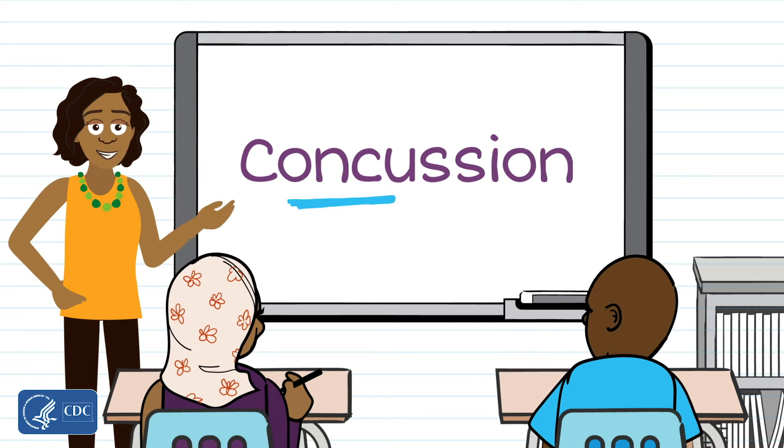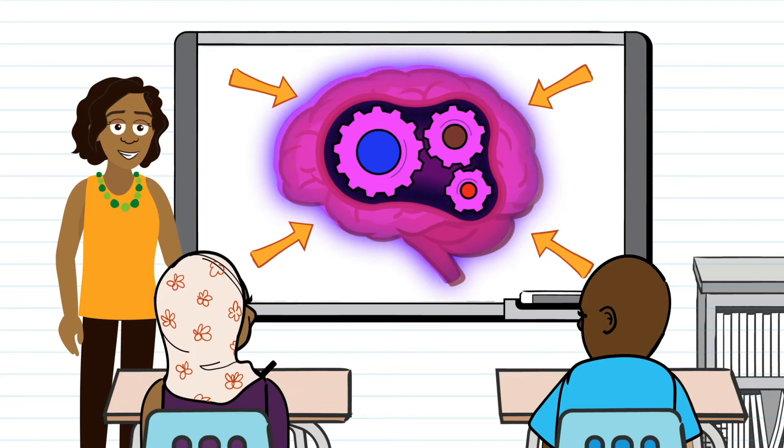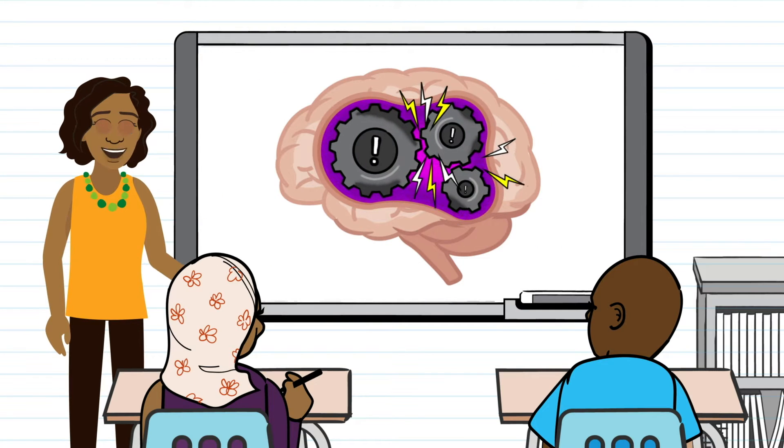First, let's look at what a concussion is. A concussion is a type of traumatic brain injury, or TBI, that can change the way the brain works.